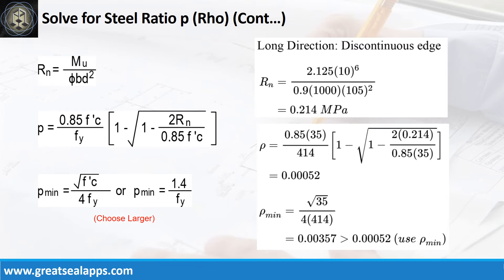Long direction, discontinuous edge: moment equals 2.125 kN·m/m. Resistance factor equals 0.9. b equals 1,000 mm. d equals 105 mm. The beam design ratio RN equals 0.214 MPa. Reinforcement ratio ρ equals 0.00052. Use ρ minimum of 0.00357.